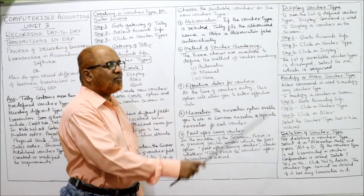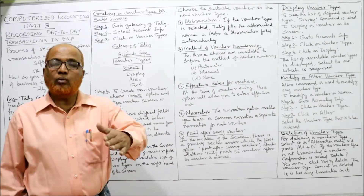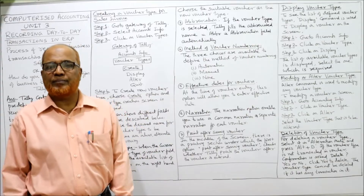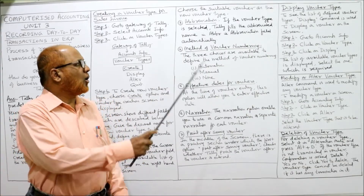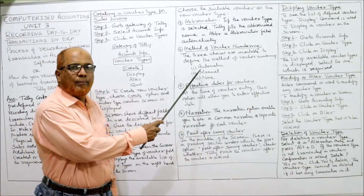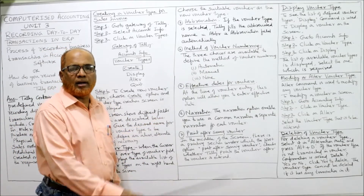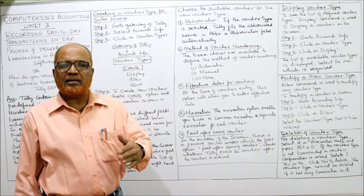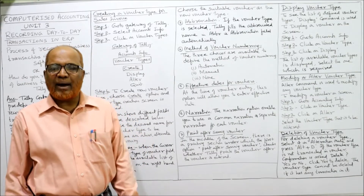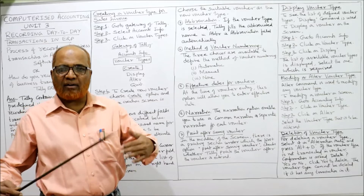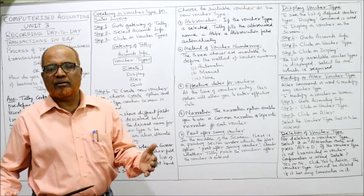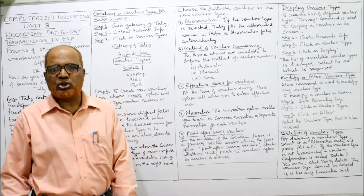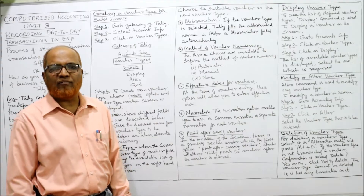Next is the Method of Voucher Numbering — how the numbering of vouchers will be done. Three options are given: Automatic, Manual, or None. Automatic means Tally assigns the numbering automatically. Manual means you provide the number. None means you are not concerned with voucher numbering at all.